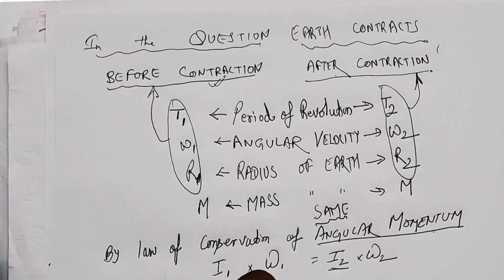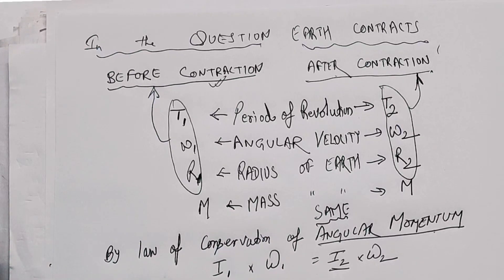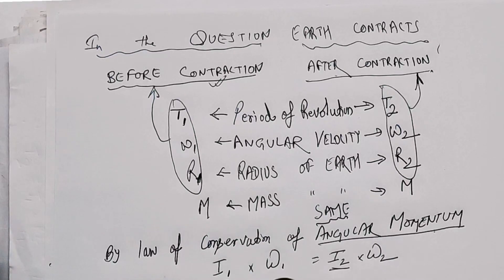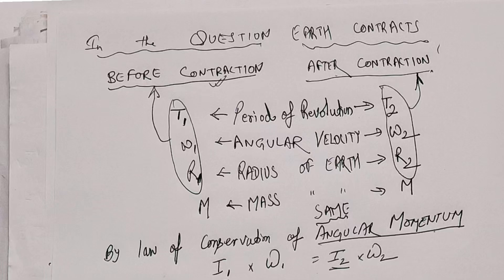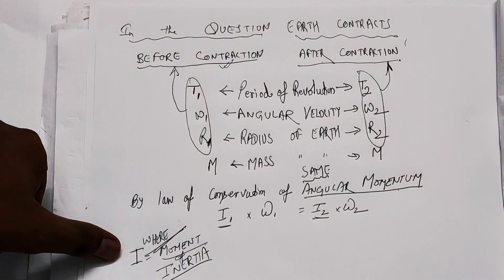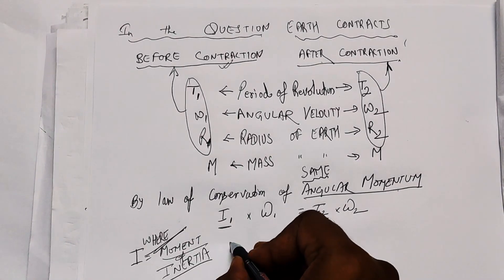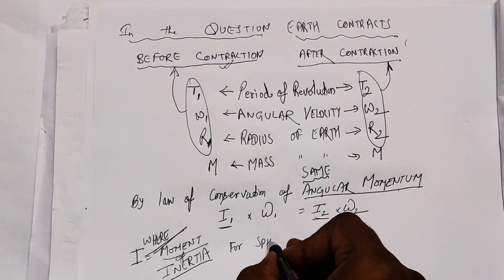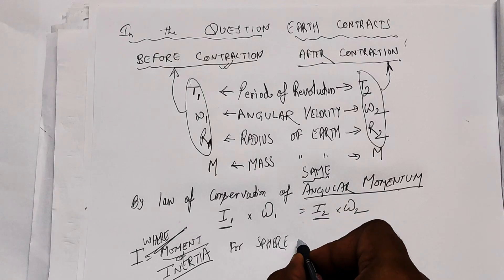I·omega before contraction comes as 2/5 MR1² × omega1, and after the contraction it becomes I2·omega2, which is 2/5 MR2² × omega2. I am just putting up the values here — just follow the question.